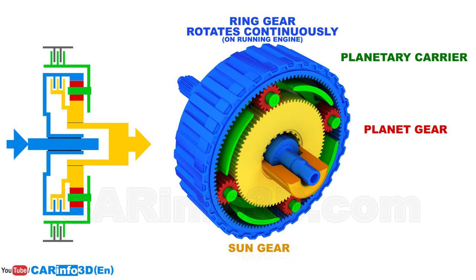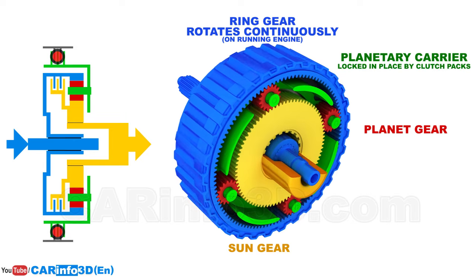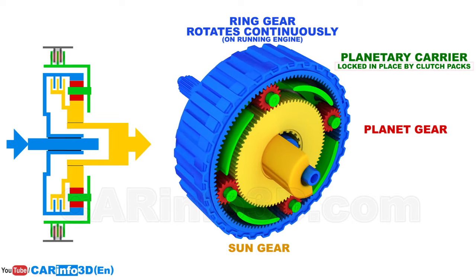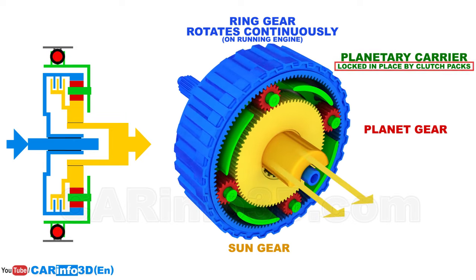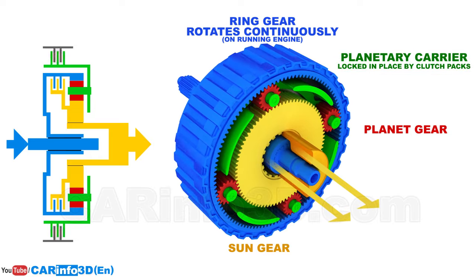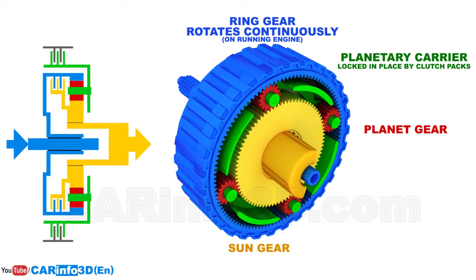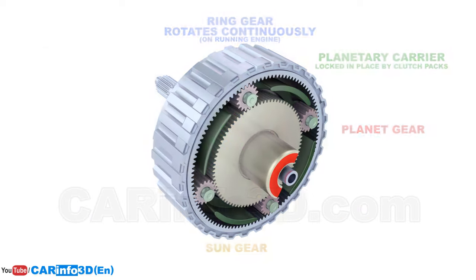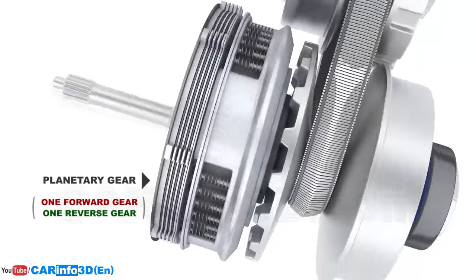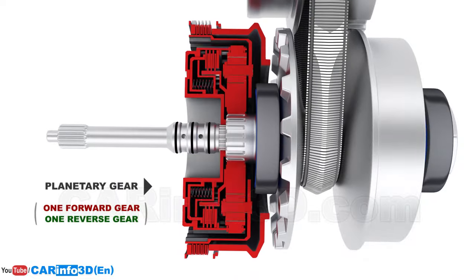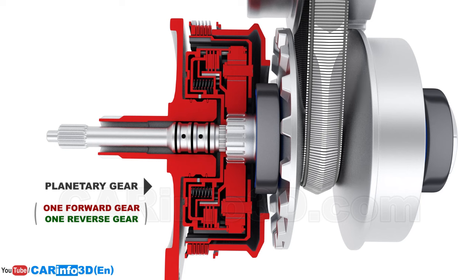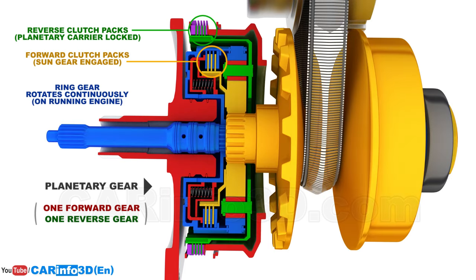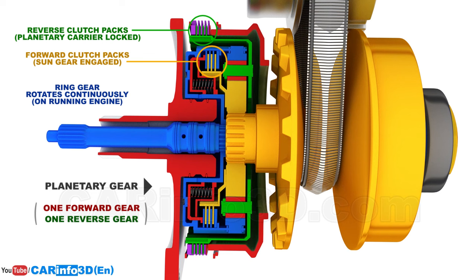When the reverse gear is engaged, the ring gear rotates still, but the planetary carrier becomes locked, allowing the force to be further transmitted but in the reverse direction. Here's a cross-section of the planetary gear. The engagement of the sun gear and locking of the planetary carrier occur thanks to clutch packs, which are compressed and mated with the help of pistons when pressurized oil is supplied to the chambers.